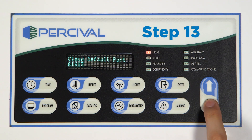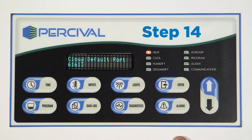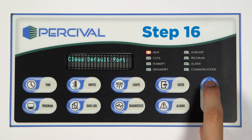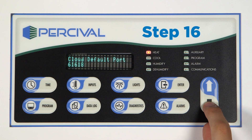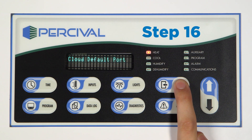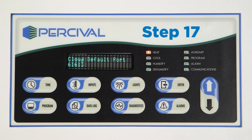Step 13: Press the down key to display cloud default port. Step 14: The cloud default port should be set to 61613. If not, proceed to the next step. If correct, proceed to step 18. Step 15: To change this setting, press the enter key. Step 16: Use the up and down keys as necessary to change the flashing character to the desired value. Step 17: Press the program key to advance to the next character. Repeatedly press the program key to scroll through and review the value. Pressing the program key at the last character will cause the character selection to wrap around. Press the enter key to accept the changes.